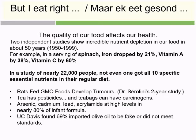Some people say they eat right, but the quality of our food affects our health. Independent studies show that nutrient depletion in food is a reality — for example, iron in spinach dropped by 21 percent, and other nutrients dropped by 38 to 60 percent. In another study of 22,000 people, not even one of them obtained all 10 specific essential nutrients in their regular diet. These are nutrients your body cannot make — you must get them from food.